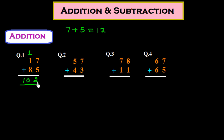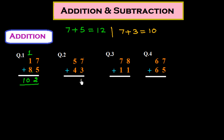In question number 2, the unit place numbers are 7 and 3. We add 7 plus 3, which is 10, so we write down 0 and carry 1. Then 1 plus 5 plus 4 equals 10, giving us 100.